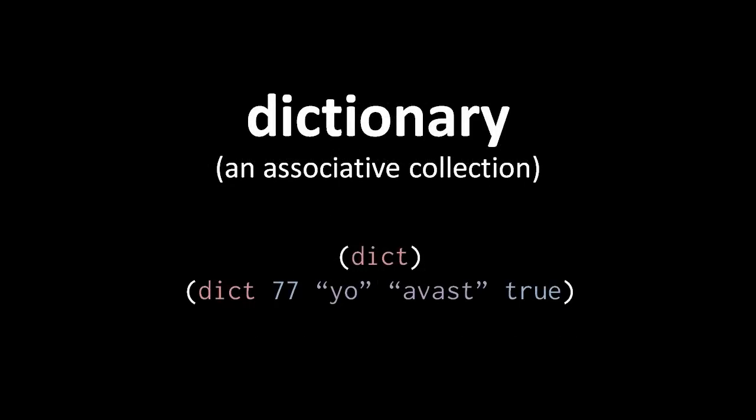Key-value pairs make up our other kind of collection type, what we'll call dictionaries. Whereas a list is a collection of values organized in sequence and known by a numeric index, in a dictionary there is no order.